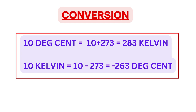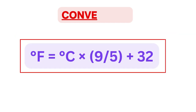To convert degree centigrade into Kelvin, just add 273. For example, 10 degree centigrade will be equal to 10 plus 273, that is 283 Kelvin. To convert Kelvin to degree centigrade, reduce 273. For example, 10 Kelvin will be 10 minus 273, giving minus 263 degree centigrade. You must also remember the conversion formula for degree centigrade and degree Fahrenheit, as shown on the screen — you need to remember this formula for solving numericals during examination.